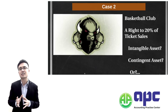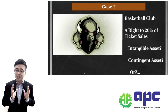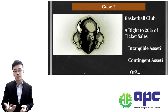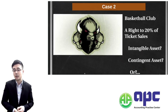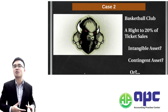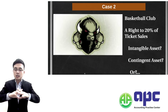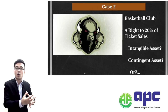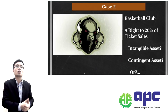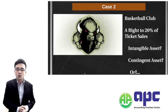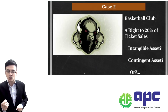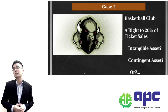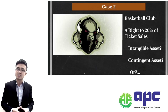Disclosing this as a contingent asset seems close but it's not quite suitable — though you could justify it. But from my perspective it's not a contingent asset because contingent assets normally refer to court cases where the asset depends on a certain event happening or not happening related to the possibility of cash flows. Disclosing this 20% ticket sales right as a contingent asset does not faithfully represent the transaction.